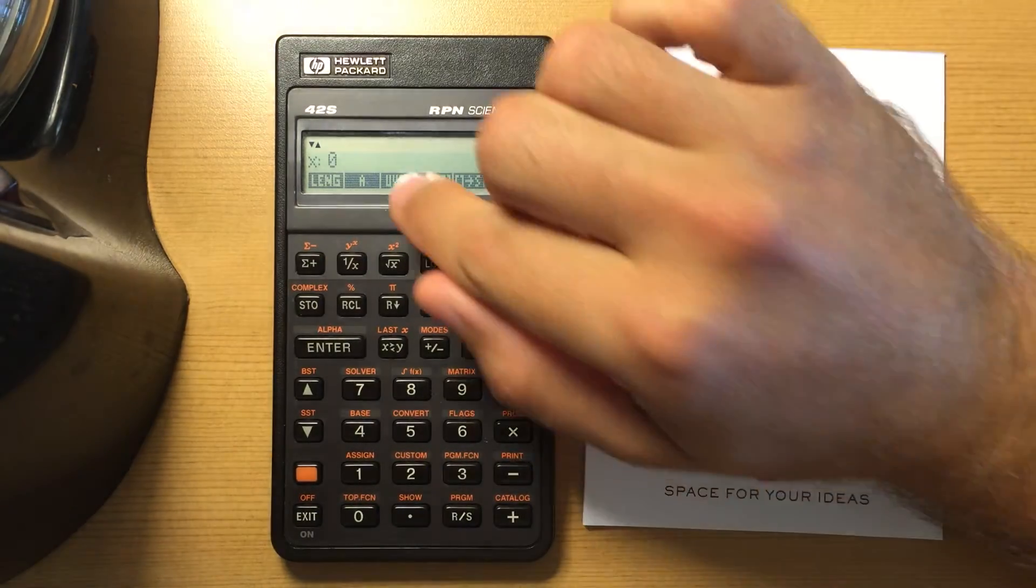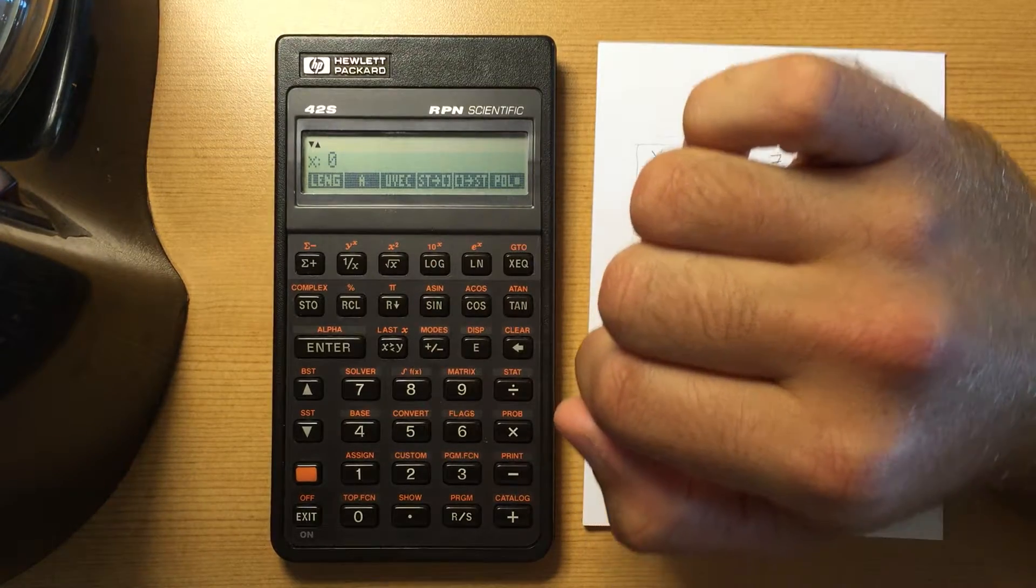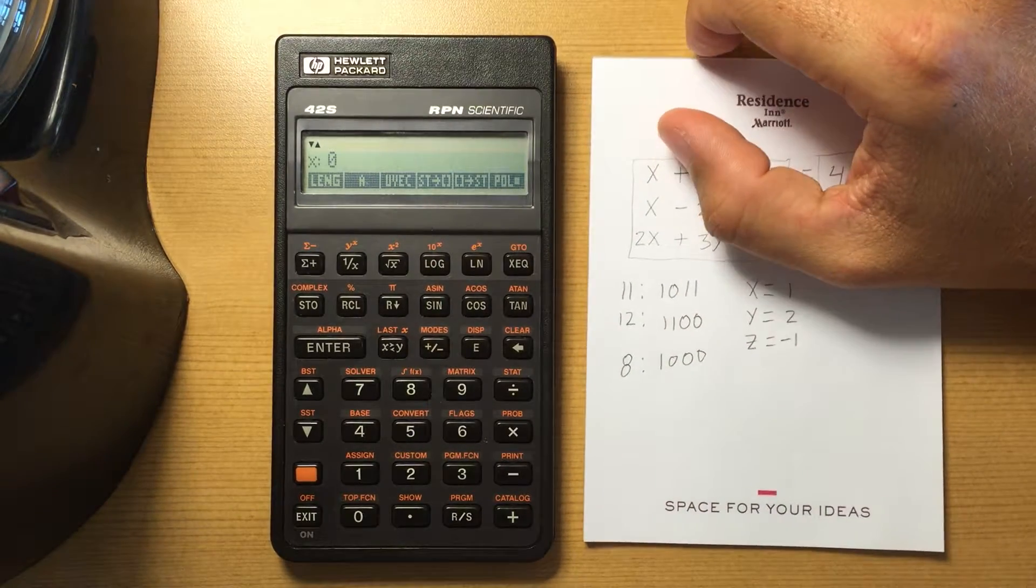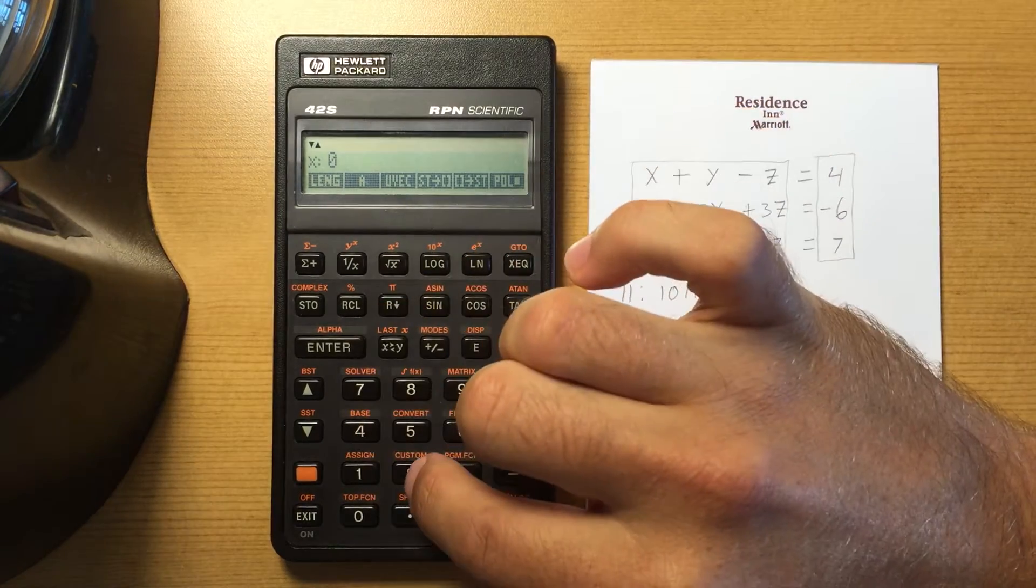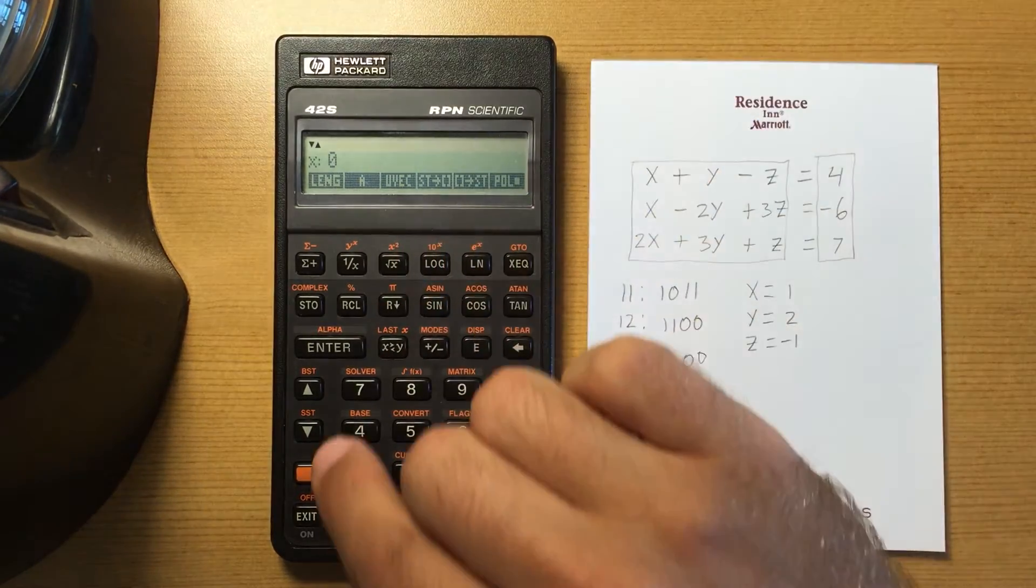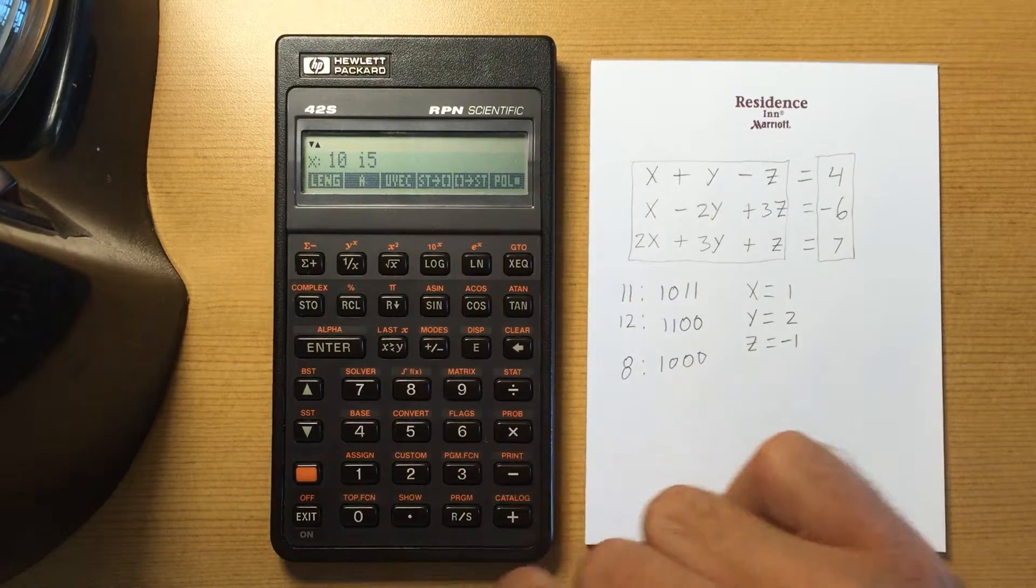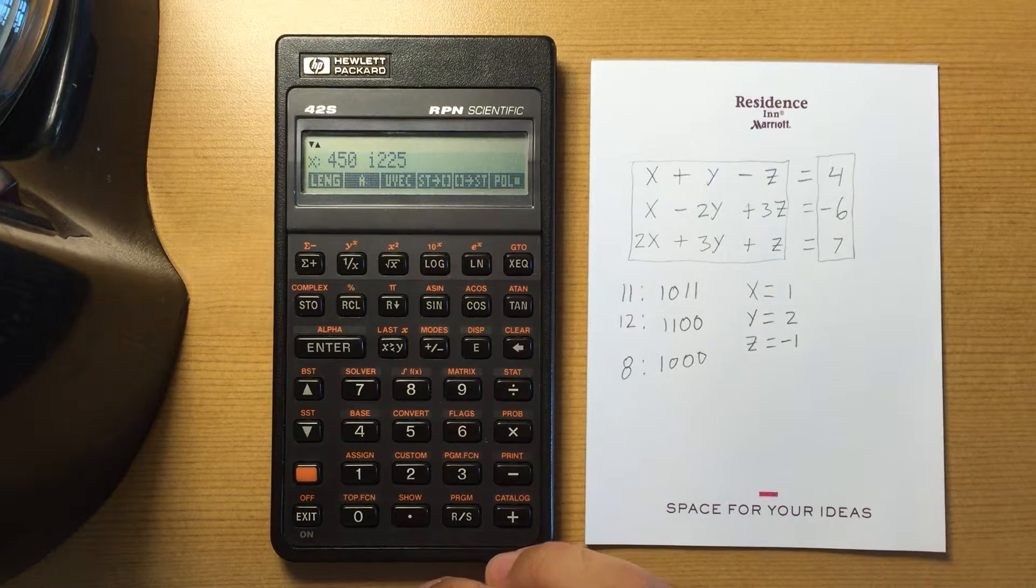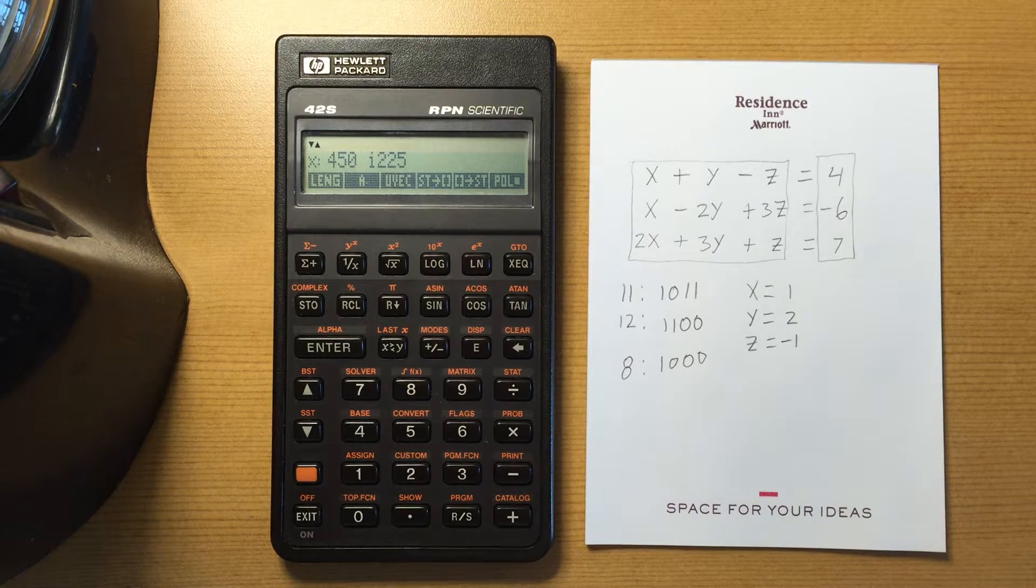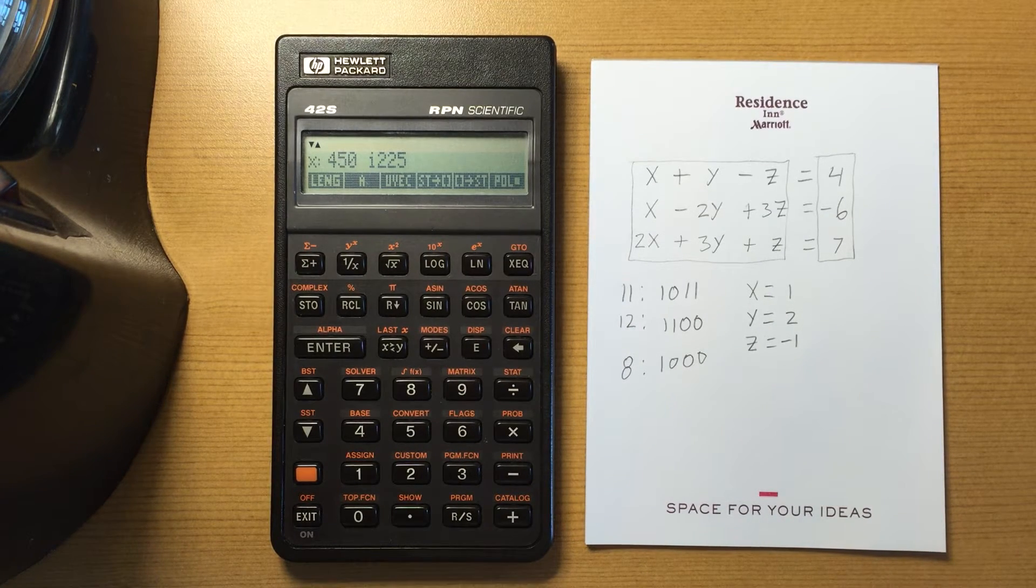So if I'm doing a lot of calculations, maybe I want to store the speed of light in one of these, or another constant that I'm using all the time, or a conversion factor. And I might store that in a custom menu and then I can enter in my numbers, maybe recall that, multiply it. And so it's a really neat feature and something that I think I will use a lot.